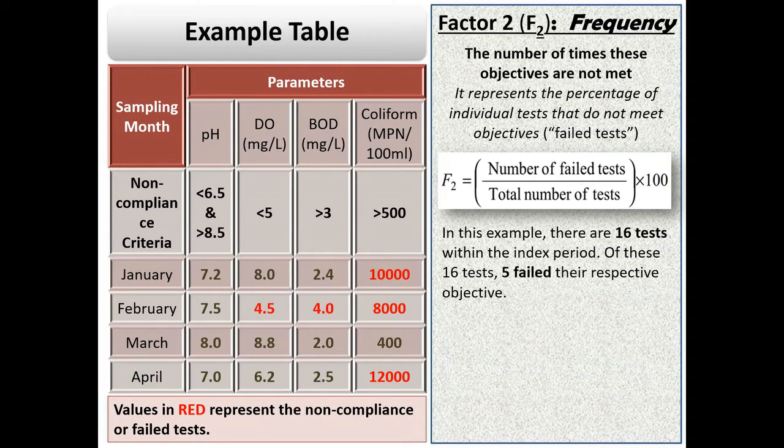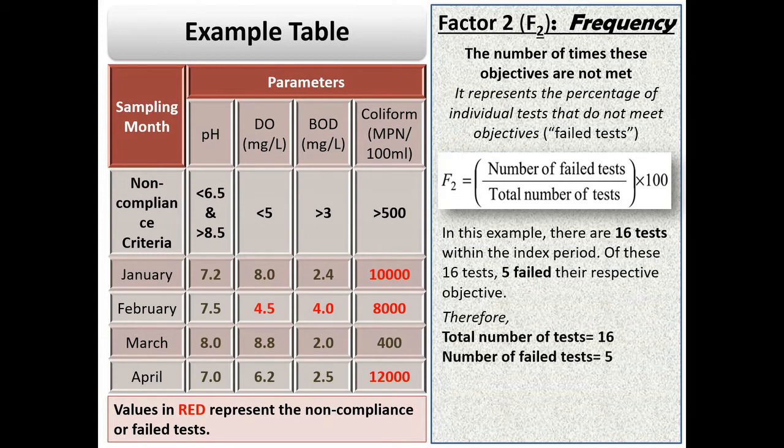Out of them, all values of pH meet the standard, whereas 1 value of DO, 1 value of BOD and 3 values of coliform count does not meet the standard. So, 5 out of 16 values do not meet the standard and are termed as the failed tests.